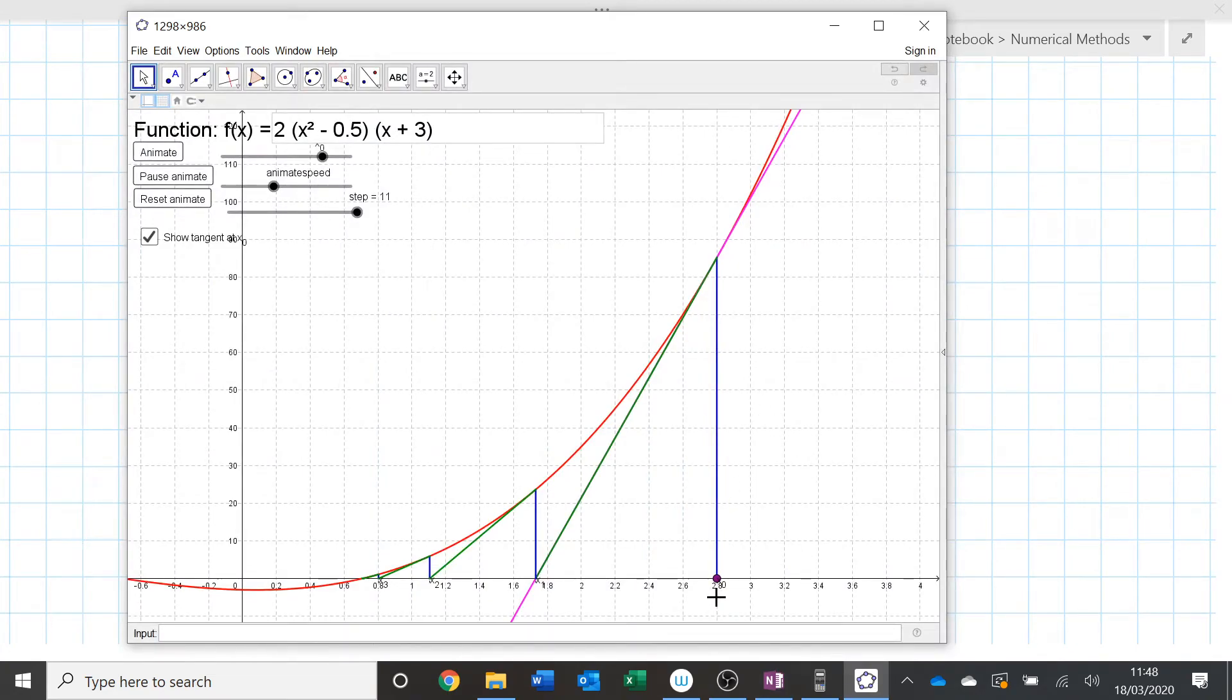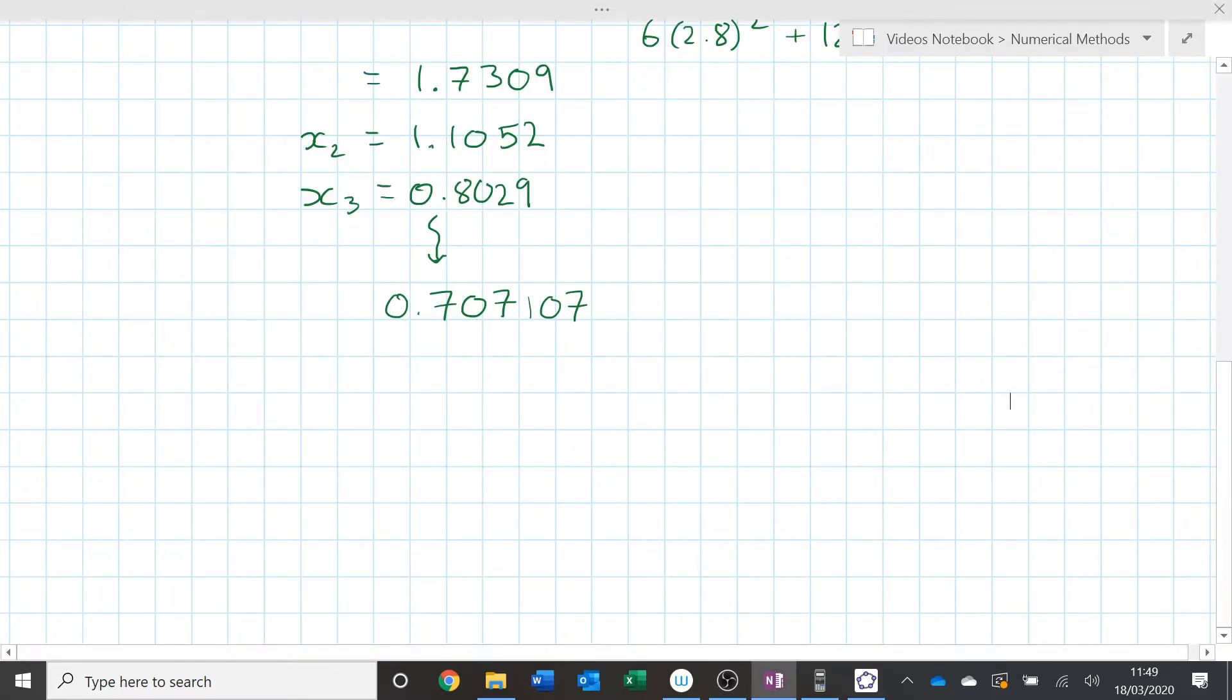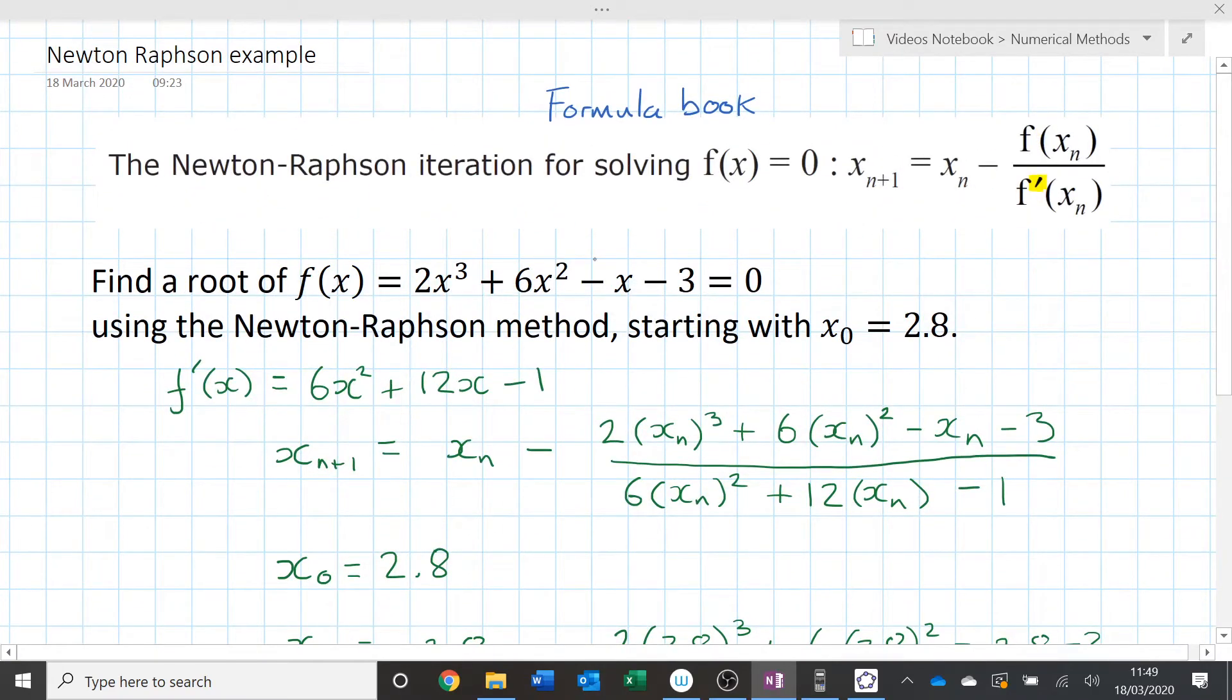That function multiplied out is the function that I had there. So it should have found the square root of 2. Because if I go back up to this equation, this equation is actually equal to 2. It should have found 1 over the square root of 2.